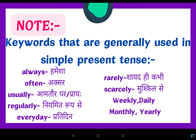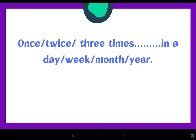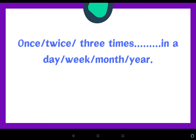Now there are some keywords that appear in simple present tense sentences: always (हमेशा), often (अक्सर), usually (आम तौर पर), regularly (नियमित रूप से), everyday (प्रतिदिन), rarely (शायद ही कभी), scarcely (मुश्किल से), weekly, daily, monthly, yearly, once, twice, three times, in a day/week/month/year. These keywords help us identify that a sentence should use simple present tense, especially in fill-in-the-blanks exercises.